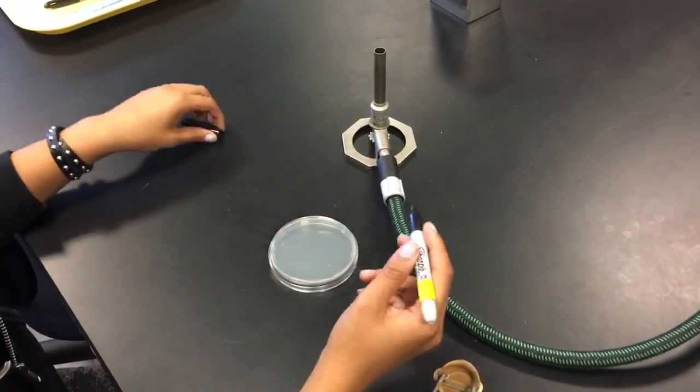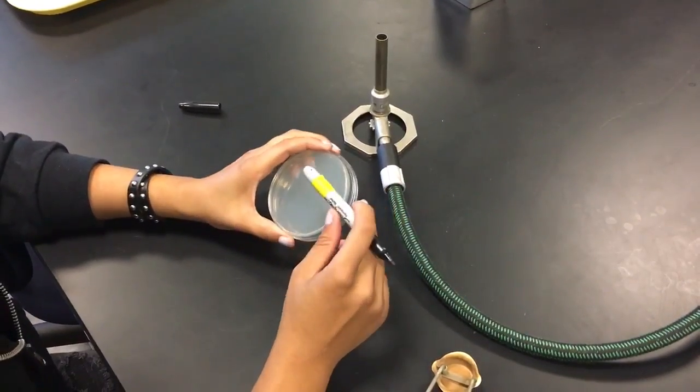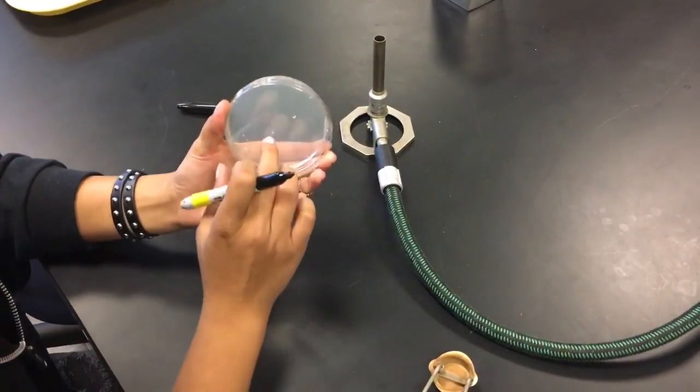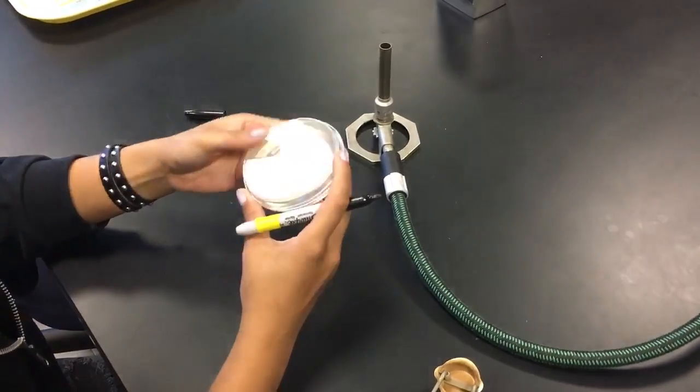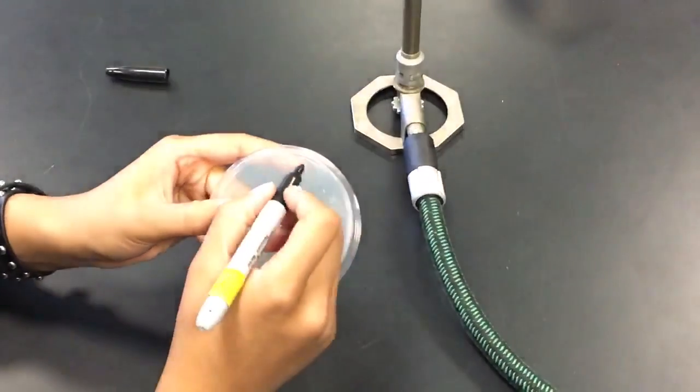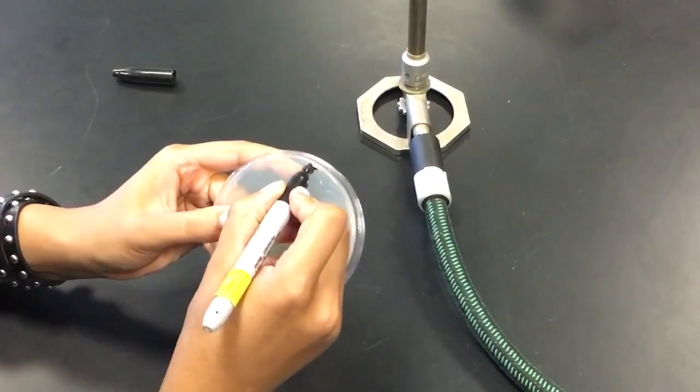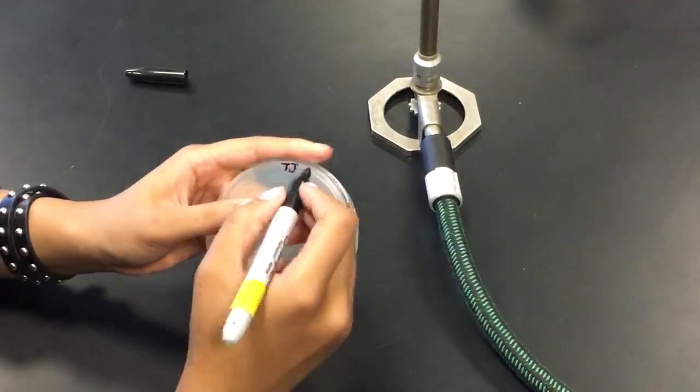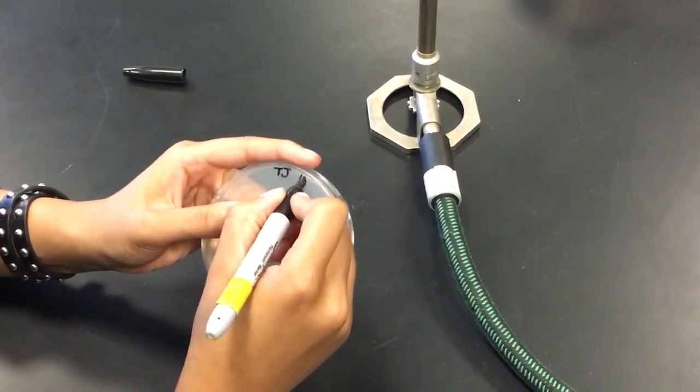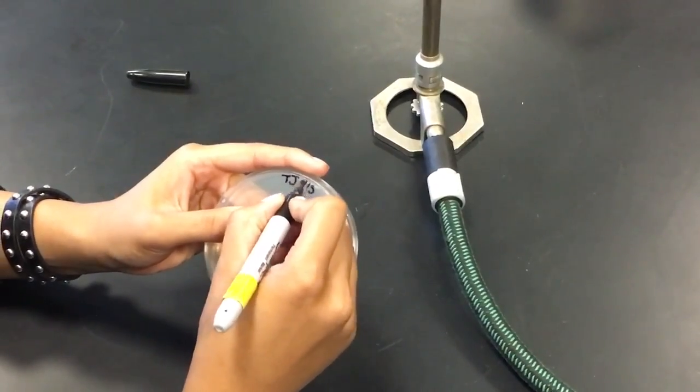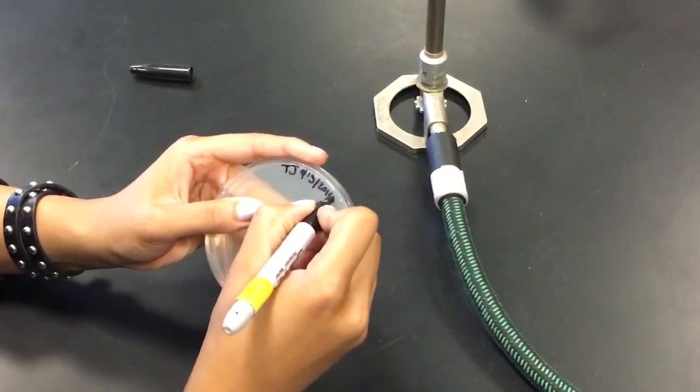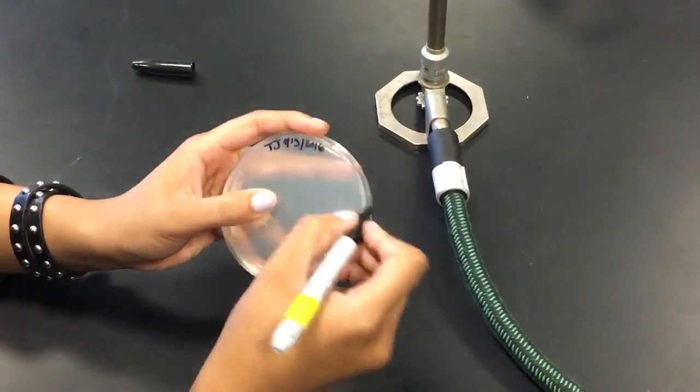So then you're going to take a Sharpie marker. And on the bottom, not the top of the agar plate, you want to be sure to write your name. And always do so along the edge here. So we'll have TJ, the date, and then lastly what the microorganism is.